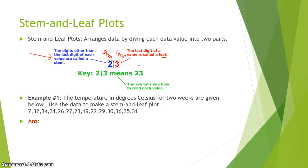Let's look at an example. The temperatures in degrees Celsius for two weeks are given, and we want to make a stem and leaf plot. The values are: 7, 32, 34, 31, 26, 27, 23, 19, 22, 29, 30, 36, 35, and 31. Our numbers range from 7 up to 36, which is our highest value.